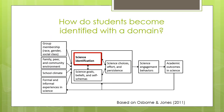So how do students become identified with a domain? Well, Osborne and Jones presented a model of identification that I have shown here for the domain of science. On the left-hand side, you can see that science identification is preceded by factors such as group membership, family, peer, and community environment, school climate, and formal and informal experiences in science.